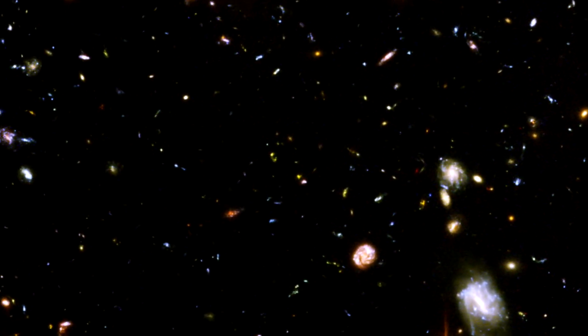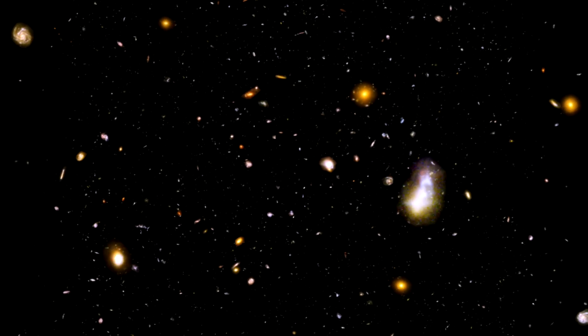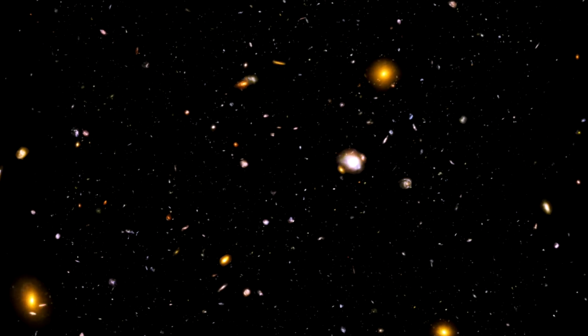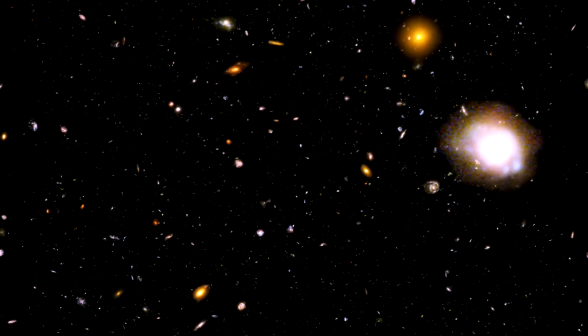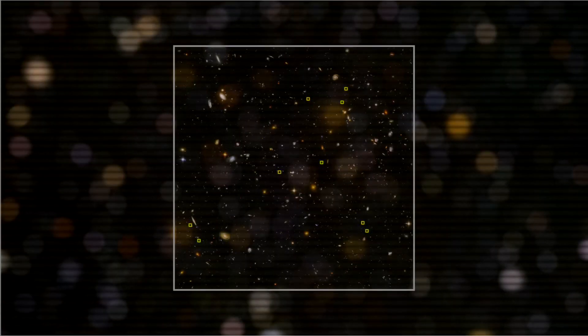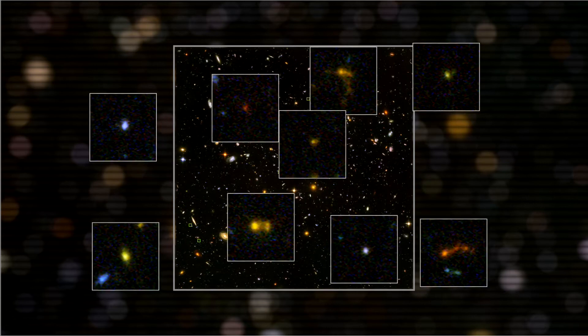By scrutinizing the Hubble Ultra Deep Field, the deepest image of the sky ever made, the NASA ESA Hubble Space Telescope and the NASA Spitzer Space Telescope have joined forces to discover nine of the smallest, faintest, most compact galaxies ever observed in the distant universe.